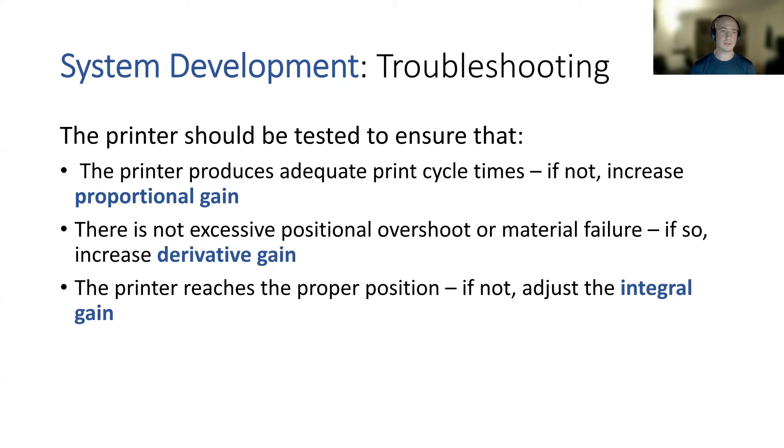You want to ensure that there's not excessive positional overshoot, something that's causing material failure. If this is happening, you want to increase your derivative gain. And then if your printer is not reaching the proper position, you're going to want to adjust your integral gain.